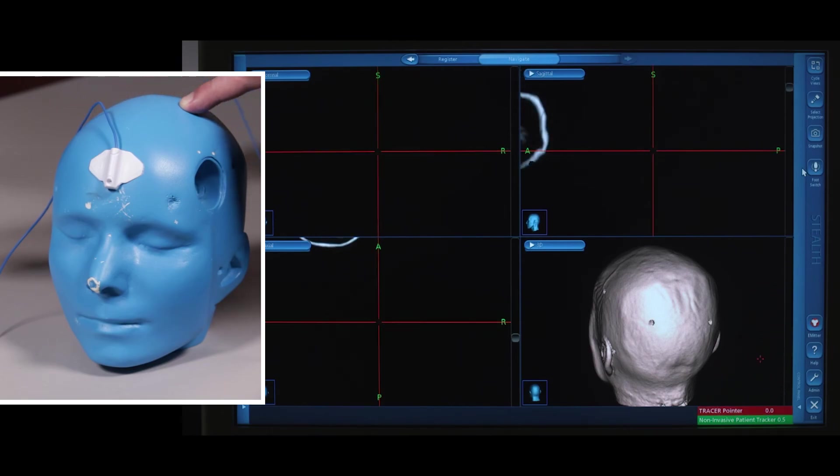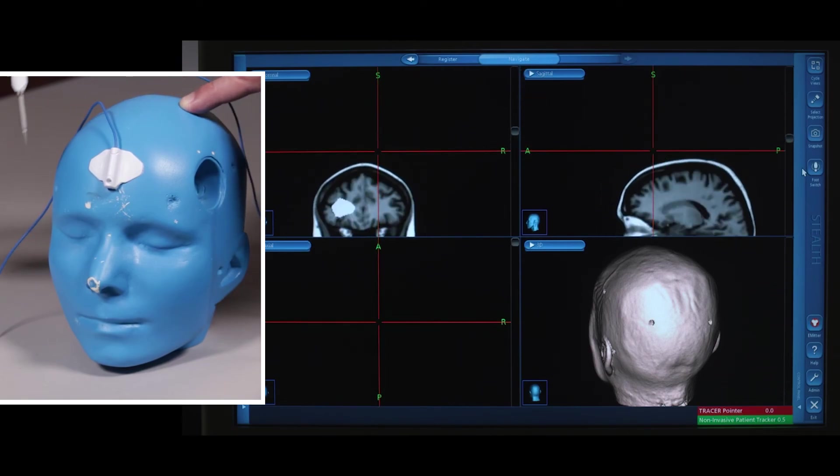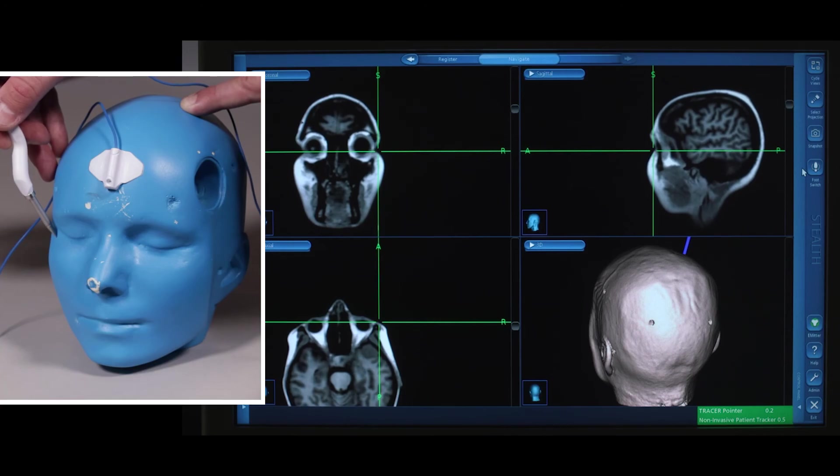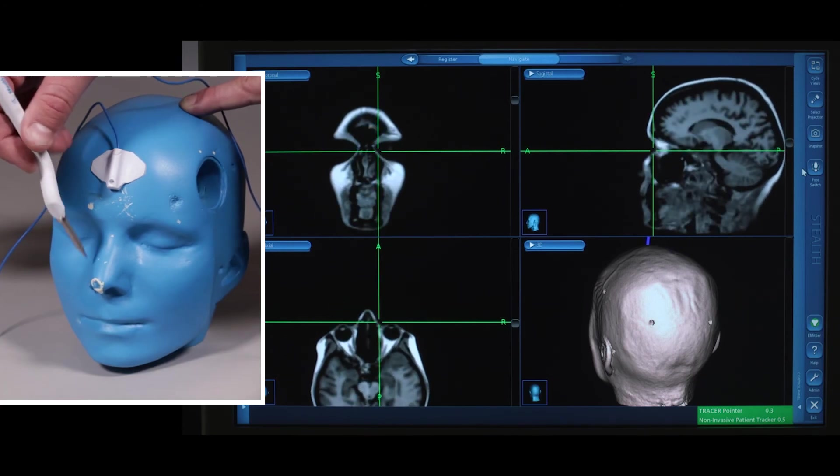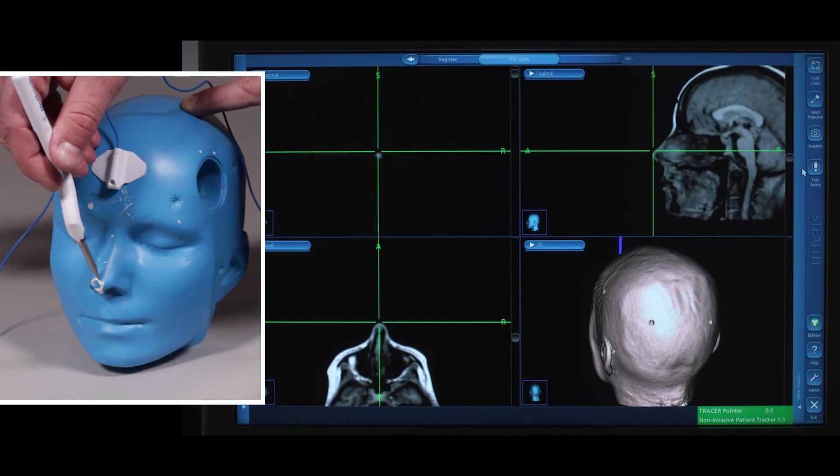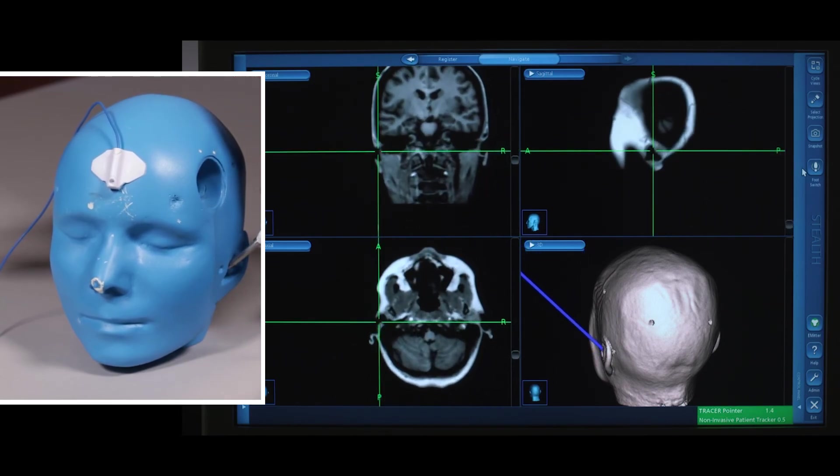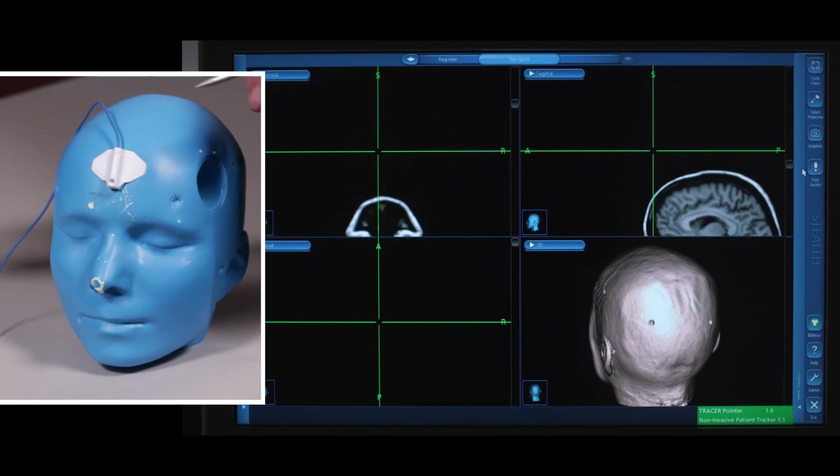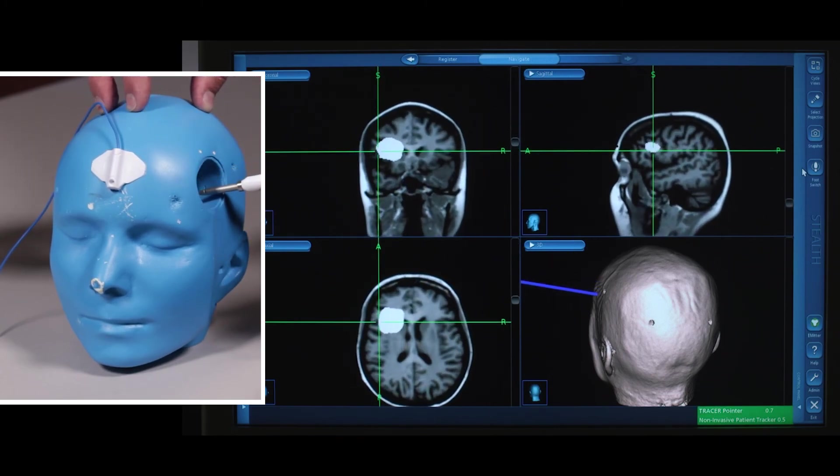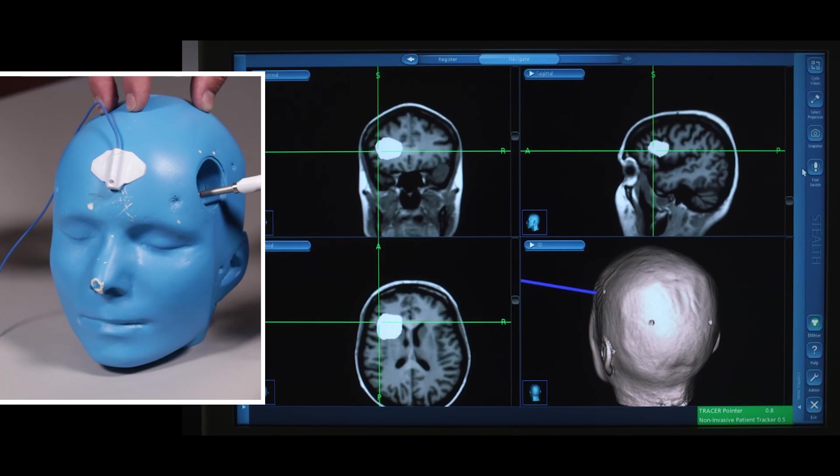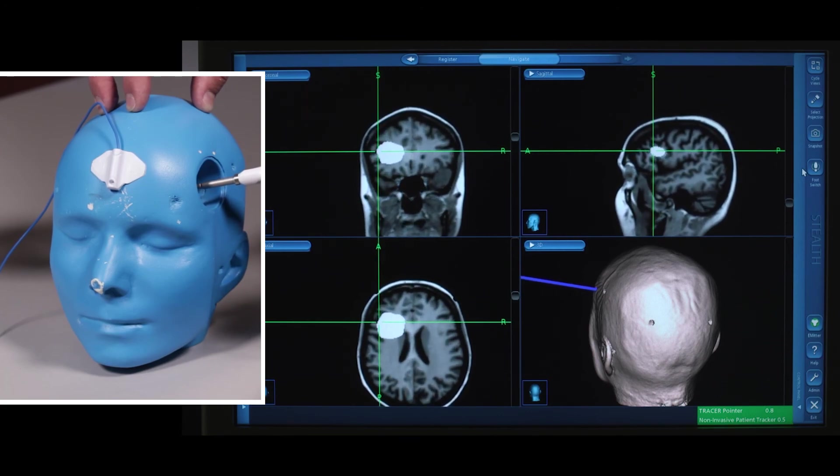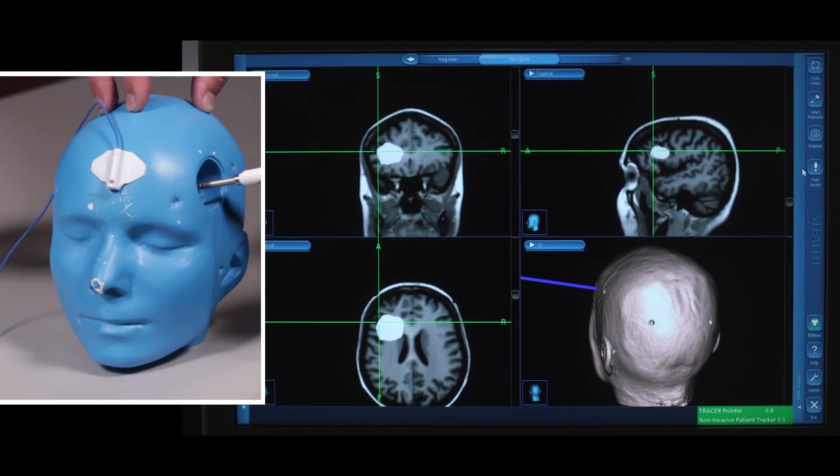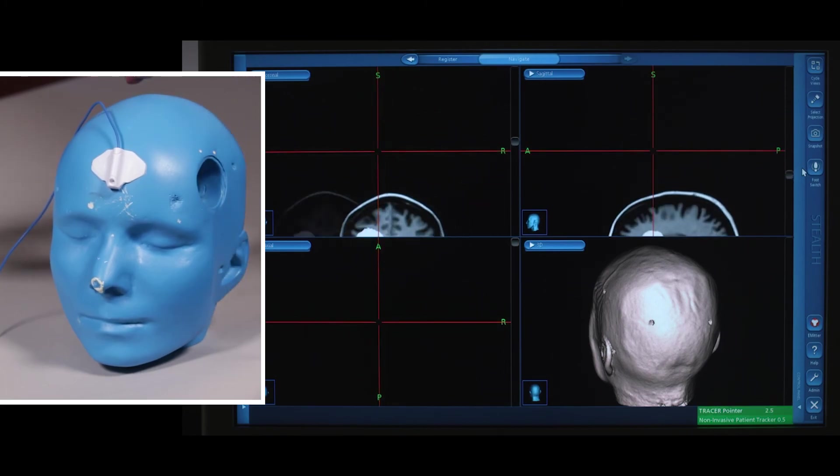Have your surgeon verify anatomy by touching known landmarks: lateral canthus, medial canthus, tip of the nose, acoustic meatus, or the tragus. Any verifiable anatomy. Here's our area of interest, the tumor. This has been a demonstration of the axiom system under cranial navigation on the S7 by Medtronic.